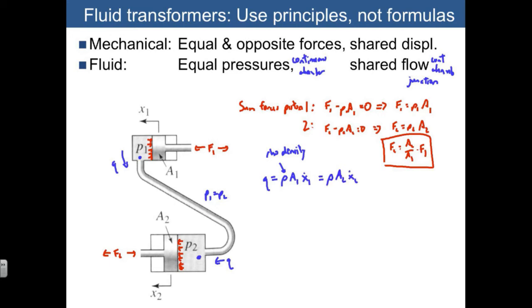If we combine these, we can actually eliminate rho and Q, and we immediately discover that x2 dot is equal to A2 over A1 times x1 dot. So now we've derived two equations, one using equal pressures and one using shared flow.